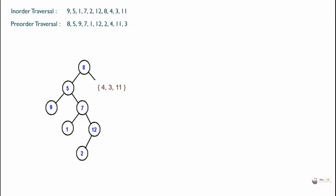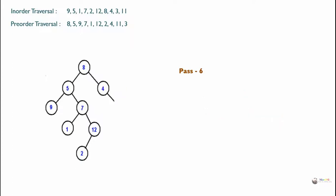Now look at the remaining right subtree: 4, 3, 11. Looking at these elements in pre-order, the element coming first from the beginning is 4. So the root will be 4. Locate 4 in in-order traversal — both 3 and 11 are coming on the right hand side of 4. So the right subtree will be 3 and 11, and the tree can be rewritten with 4 as the root and 3 and 11 on the right subtree.